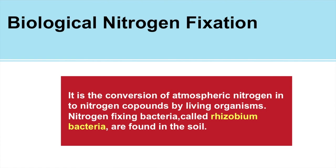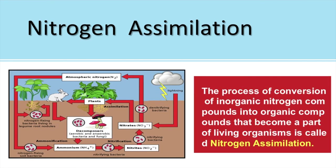Those were the two parts of nitrogen fixation. Now we come to the next step: nitrogen assimilation. Nitrogen assimilation is the process of conversion of inorganic nitrogen compounds into organic compounds that become a part of living organisms. When plants absorb nitrate from the soil, they convert it into plant protein. That nitrogen then passes from plants to herbivores when they eat the plants, and from herbivores to carnivores — this whole process is called nitrogen assimilation.